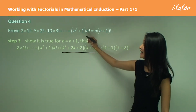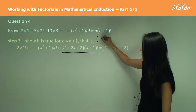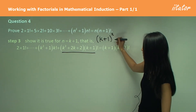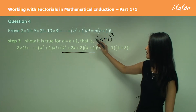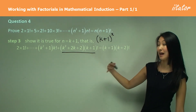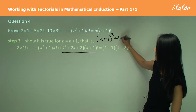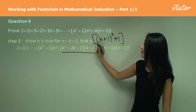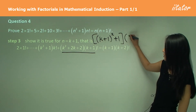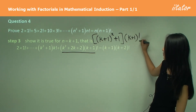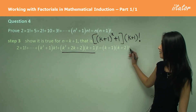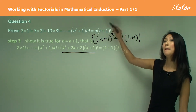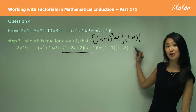Instead of N², I'm writing in (K+1)², which gives me K²+2K+1, and because I'm adding 1 to that, I get K²+2K+2. And from the N factorial term, I get (K+1) factorial. Whereas on the right hand side, instead of N I write K+1, and instead of N+1 I write K+2, which is how I get (K+2) factorial.